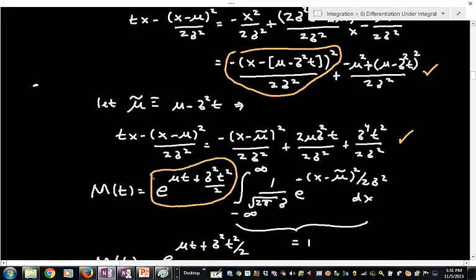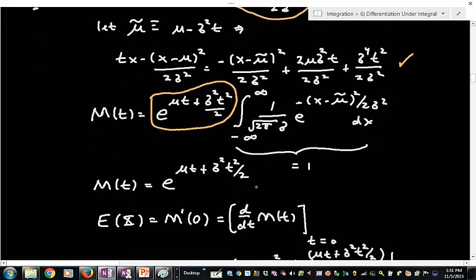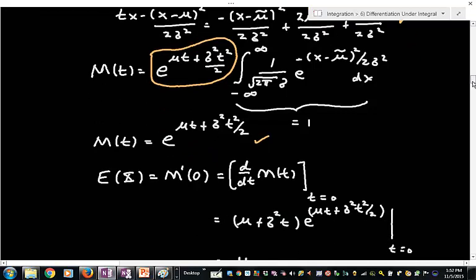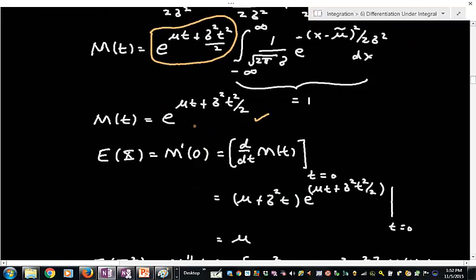And again, I would urge you to verify all of these steps. But this is what you get. So this is my moment generating function. It's not that difficult for a normal distribution. And now I'm going to try what we said a second ago. I'm going to go ahead and take the derivative of m, evaluate it at 0, and see if I get the mean. And when I do, I take the derivative with respect to t, I get the following expression.